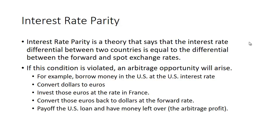For example, you might borrow money in the U.S. at the U.S. rate, convert those dollars to euros, invest those euros at the rate in France, and convert those euros back to dollars at the forward rate. So everything is known—the interest rate, the spot rate, the forward rate—and once you convert back to dollars, you're able to pay off the U.S. loan and have money left over. That money that's left over is your arbitrage profit.